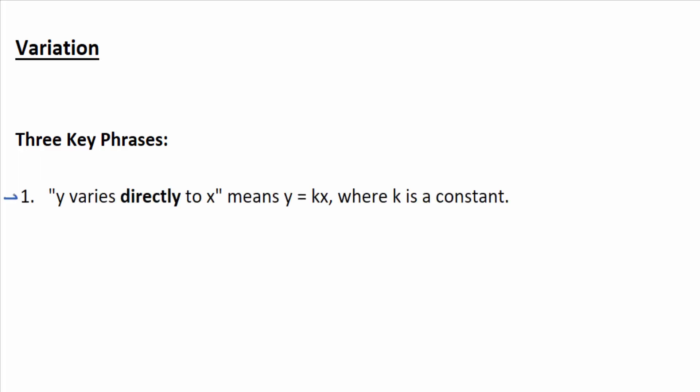Phrase number one: when you see something like y varies directly to x, or as x, or y is directly proportional to x, the key word is directly. The rest of the phrasing may change.